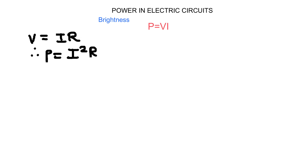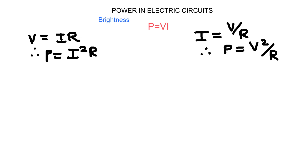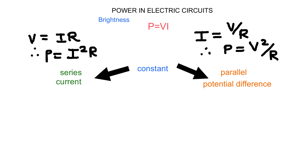The opposite is also possible. We might be working with bulbs in parallel. In parallel, the potential difference across the resistors is constant but the current is divided, so the current is the more complicated one to determine. Replacing the current with V over R from Ohm's law, we end with the formula P equals V squared over R. For resistors in series the current remains constant, while in parallel the potential difference remains constant.